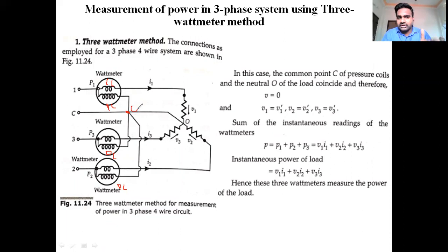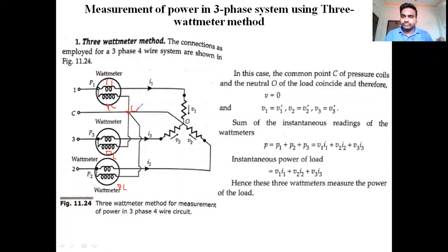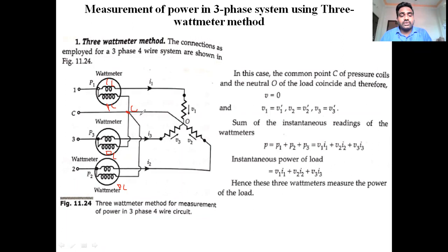In Blondel's theorem, the three-phase three-wire system analyzed the common point away from the line. But here, in the three-phase four-wire system three-wattmeter method, the common point of the voltage elements is connected with respect to the neutral wire. That means the voltage at the common point small v equals zero.